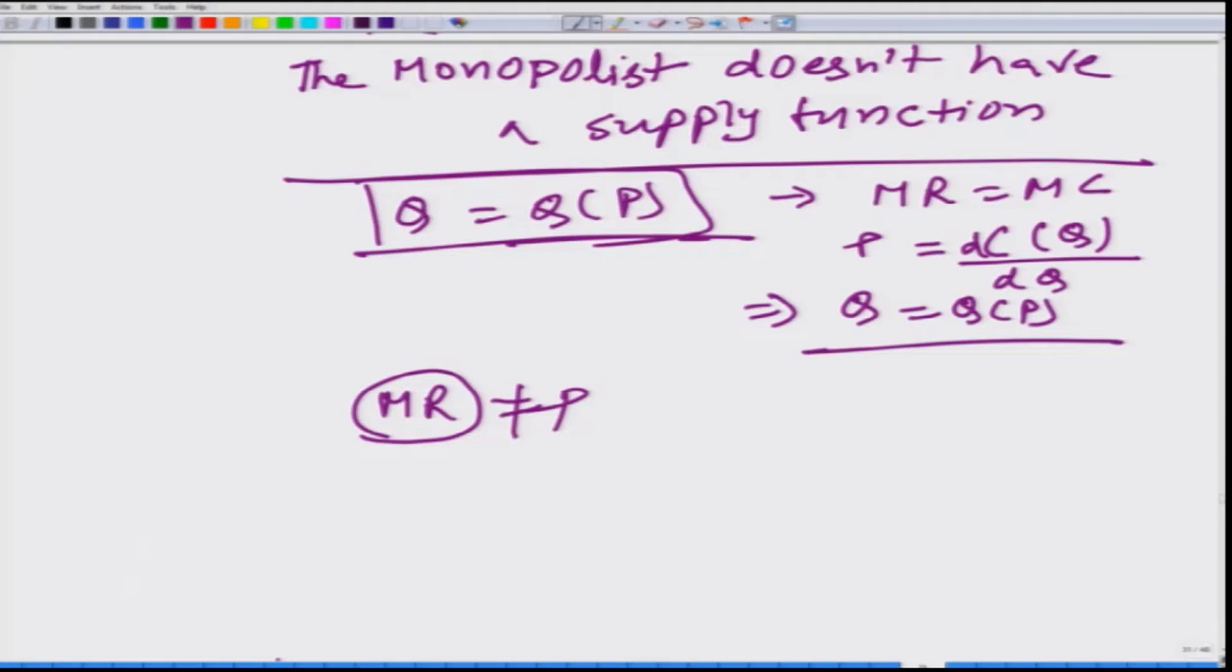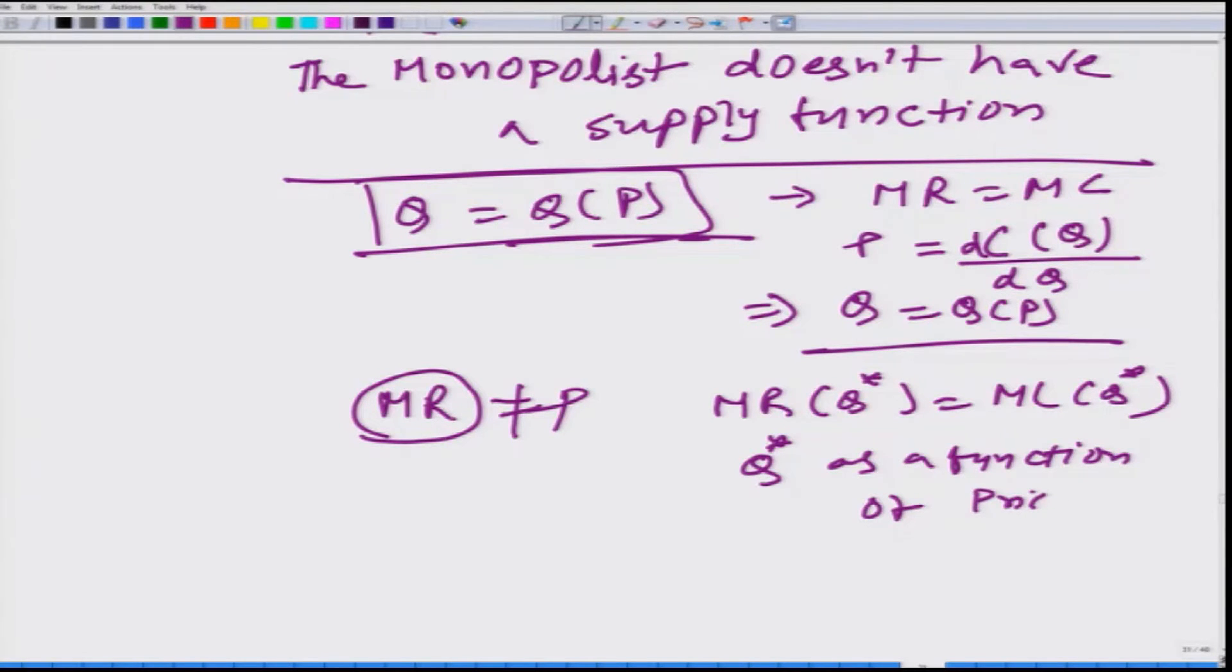What we get here is that MR at Q star is equal to MC of Q star. From here we cannot express Q star as a function of price independently - this is simply not possible.